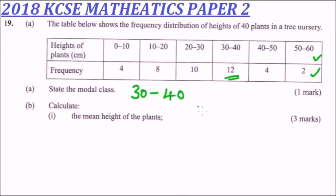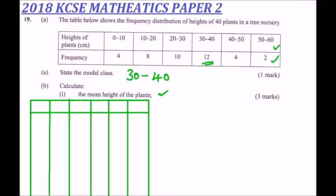The second question asks us to calculate part A — the mean height of the plants. To do this, we need to prepare a table to help us get the mean height more easily. You don't necessarily have to use a ruler; I've done that for my own convenience — you can just use your free hand.